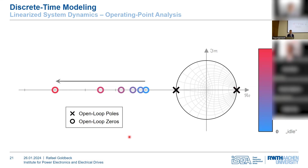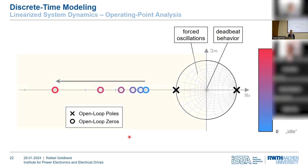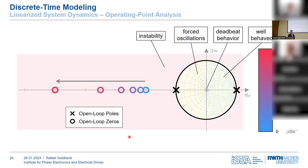To interpret these pole and zero locations: at the origin we have deadbeat behavior — the fastest we can get, reaching a new steady state within one step. In the left half-plane we can expect forced oscillations, and if the pole locations are outside the unit circle we have instability. Well-behaved pole locations are therefore somewhere in the right half-plane within the unit circle. The poles on the right side show integral behavior of the related state variable, while the pole on the left shows undesirable dynamics creating forced oscillations.